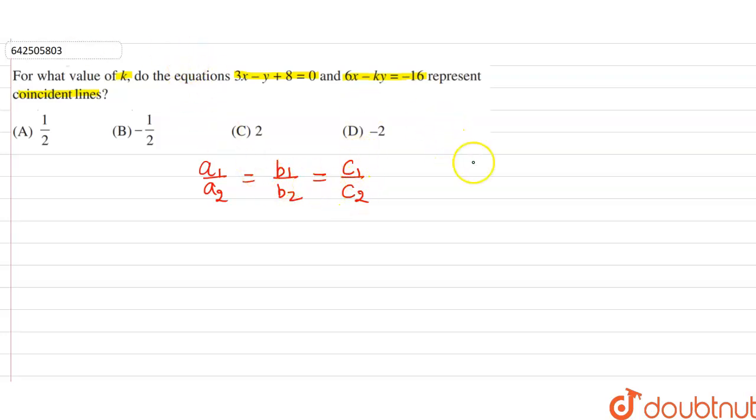Now we have two equations here. 3x minus y plus 8 equals 0, this is equation 1. The second equation is 6x minus ky equals minus 16, which can be written as 6x minus ky plus 16 equals 0. So this is the second equation.